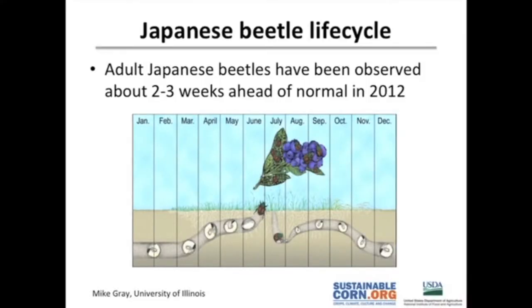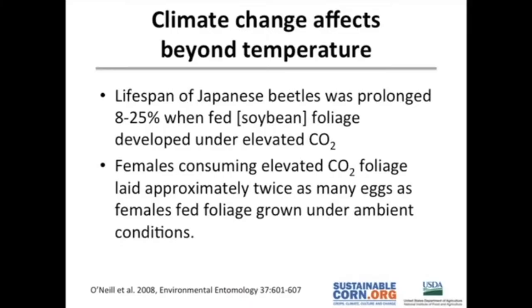Looking at the life cycle of a Japanese beetle — from University of Illinois work — Japanese beetles overwinter as white grubs and usually emerge in mid to late June. This year we saw them in Iowa showing up in May, on plants that were much smaller than normal. Japanese beetles can also be affected by carbon dioxide. A study looking at CO2 and survival and reproductive abilities found that lifespan increased when beetles fed on foliage grown in elevated CO2, and they laid almost twice as many eggs compared to leaves grown in ambient conditions.